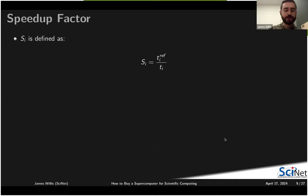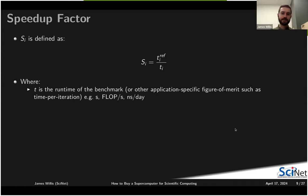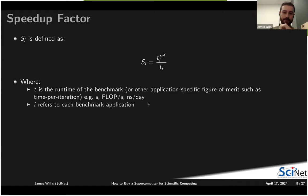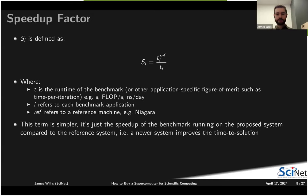The next term is the speed factor S — you take the total runtime of the benchmark, or another figure of merit such as time per iteration, a rate, or nanoseconds per day for molecular dynamics codes. This gives you the total speedup. 'ref' is again Niagara as the reference, and i refers to each benchmark. It's simply the speedup of the benchmark running on the newer system compared to the reference, with the idea that the newer system will improve time to solution.